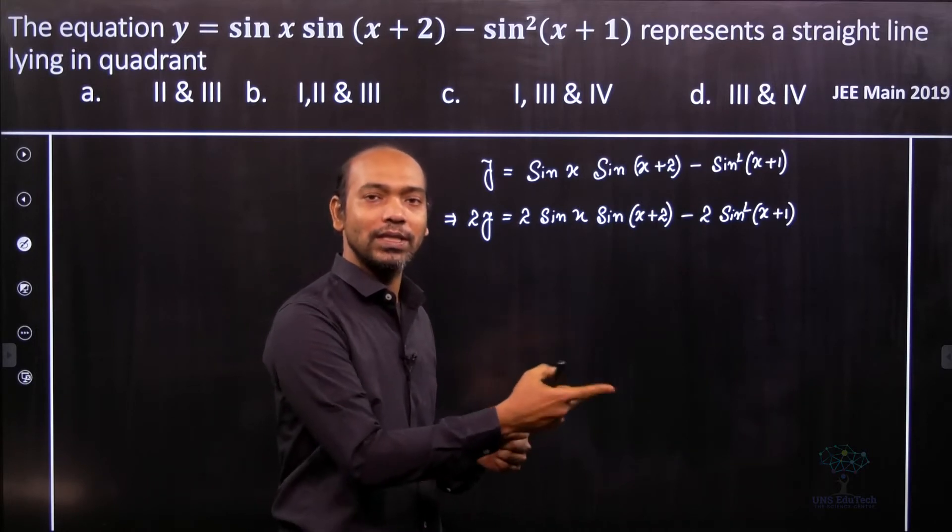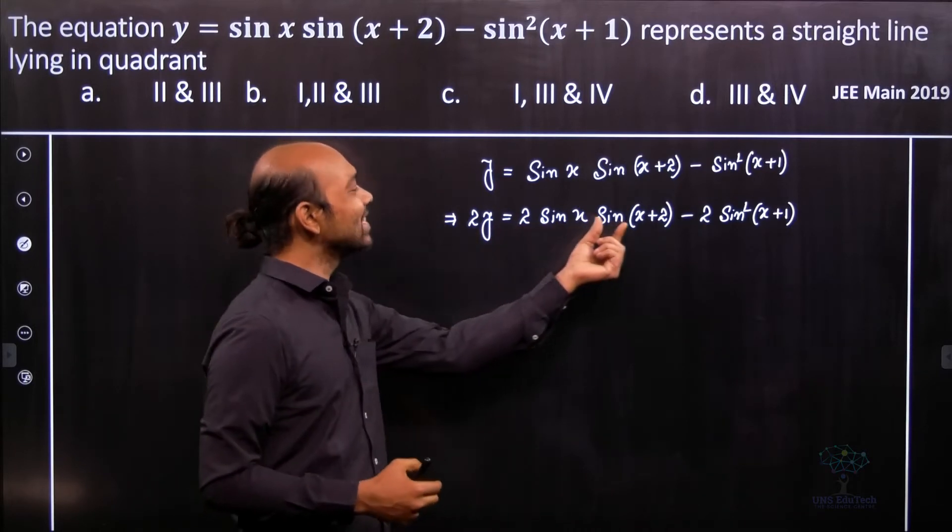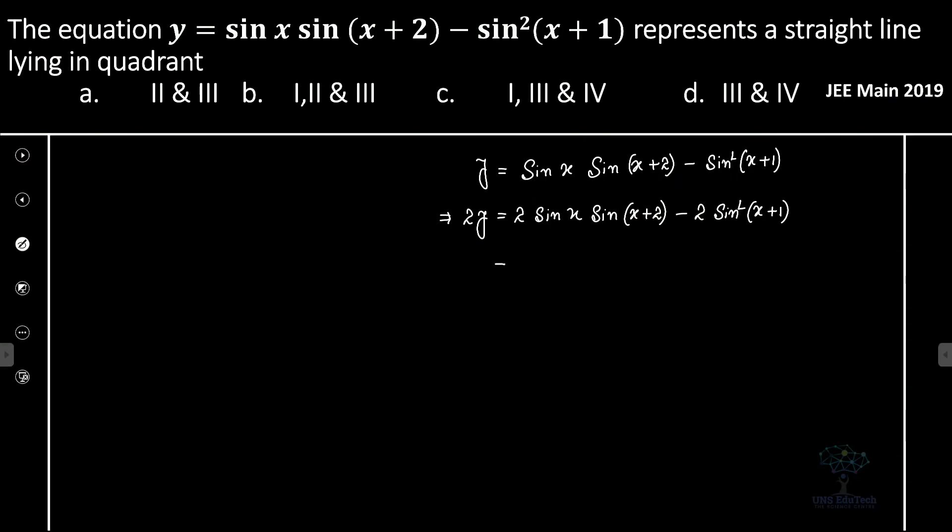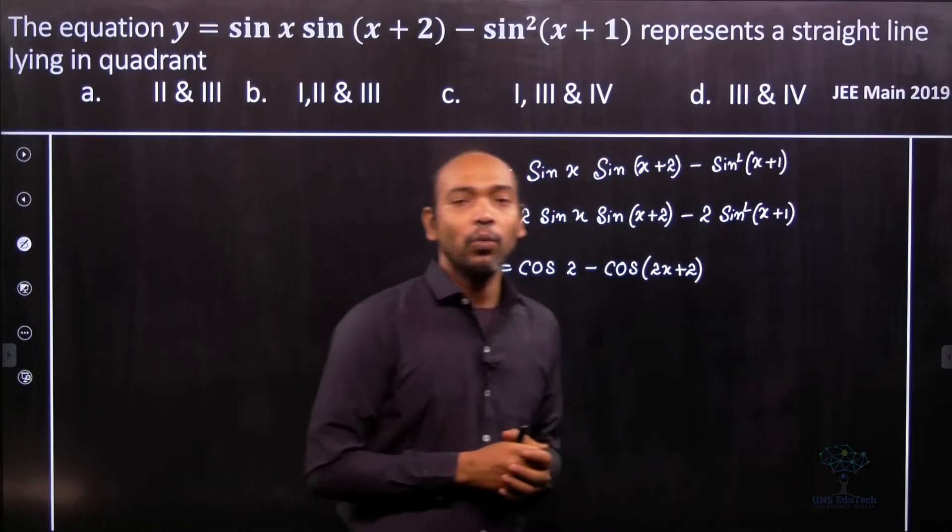So if we consider x + 2 as a, then cos(a - b) gives cos 2 minus cos(a + b) gives cos(2x + 2). This is what we obtain.